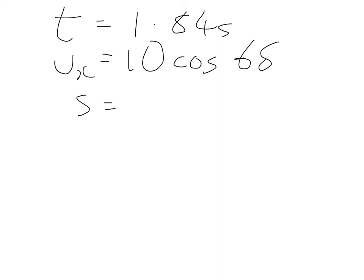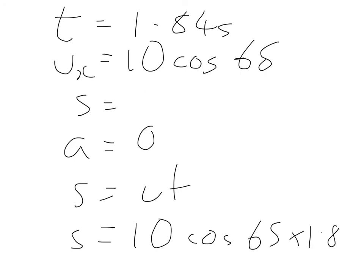Now there is no acceleration in the horizontal direction, so we can use S equals UT plus half AT squared, which simplifies down because A equals zero. It makes S is equal to UT. And because S equals UT, all we need to do is multiply the two together and we find our horizontal velocity. So S is equal to 10 cos 65 times 1.84. And this will give us our distance.